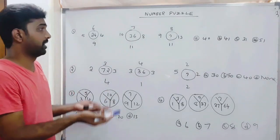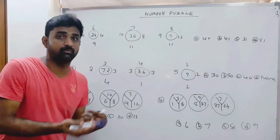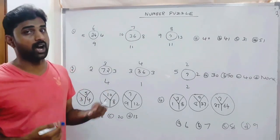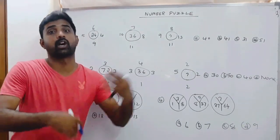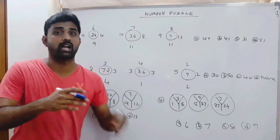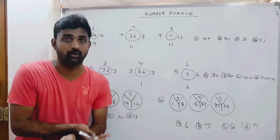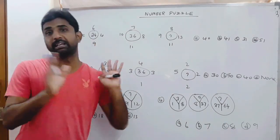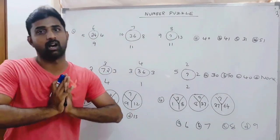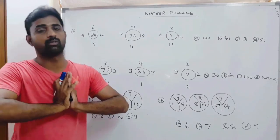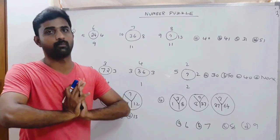The logic can be anything — whether it may be addition, subtraction, multiplication, square roots, cube roots, cube roots of cube roots, or square roots of square roots. Anything is possible. If you don't know the logic, try it.